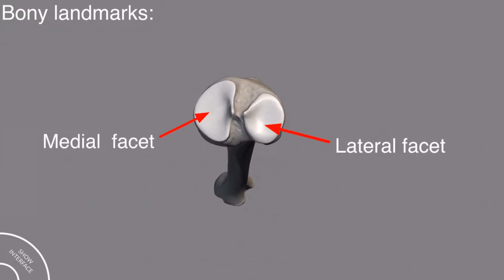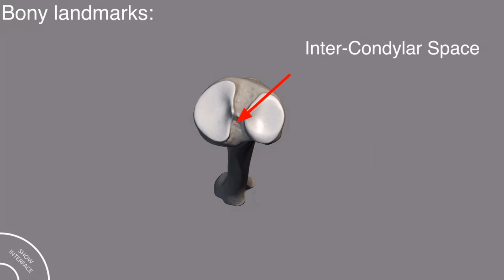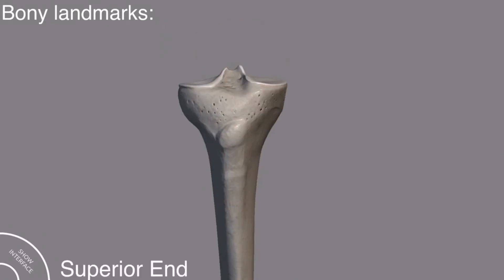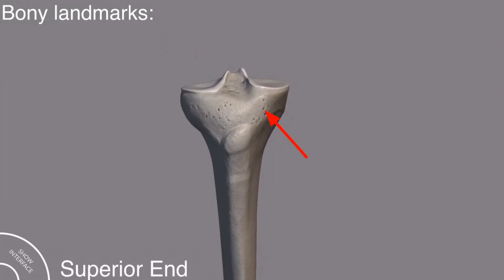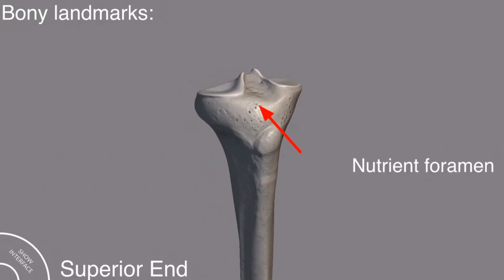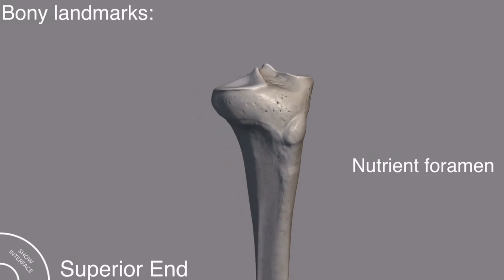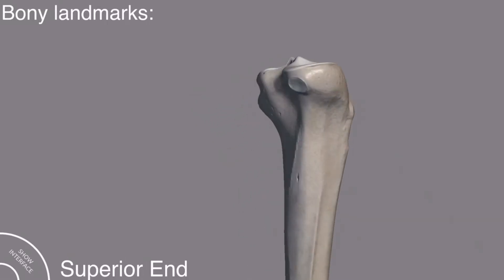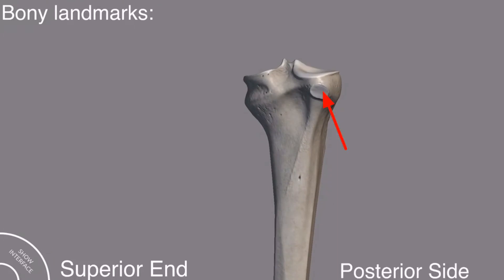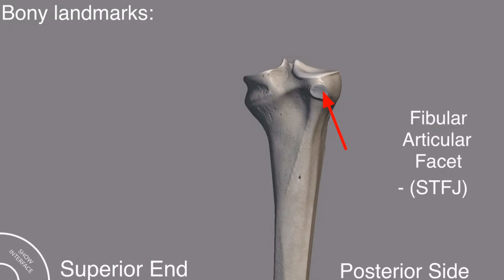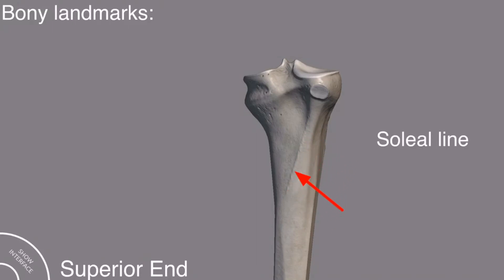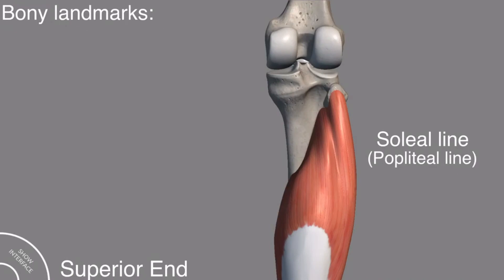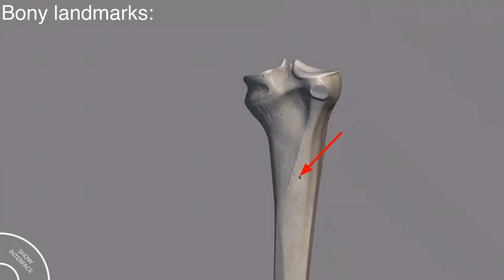Between these two facets is the intercondylar space — this hole is the intercondylar space — and if you look carefully there is an eminence called the intercondylar eminence. In the superior end you will see many pores; these are the foramina through which nutrient vessels enter the tibia bone. On the posterior side, this is the fibular articular facet involved in the superior tibiofibular joint, this is the soleal line (also called the popliteal line) on which the soleus muscle originates, and this foramen is the nutrient foramen.